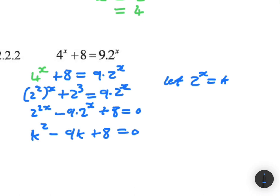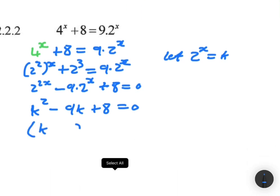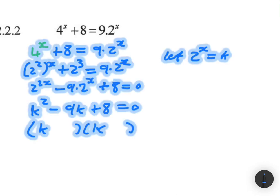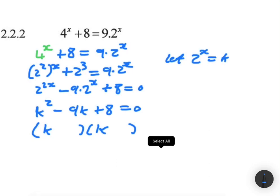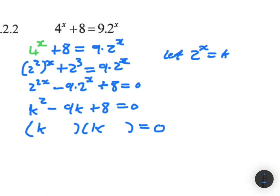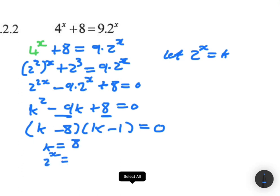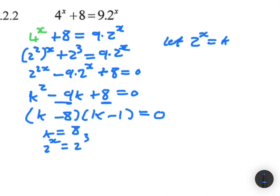Factorizing k squared minus 9k plus 8: we need two numbers that multiply to 8 and add to minus 9, which are minus 8 and minus 1. So we get k minus 8 times k minus 1 equals 0. From the first bracket, k equals 8, so 2 to the x equals 2 to the power 3, giving x equals 3. From the second bracket, k equals 1, so 2 to the x equals 1, giving x equals 0.